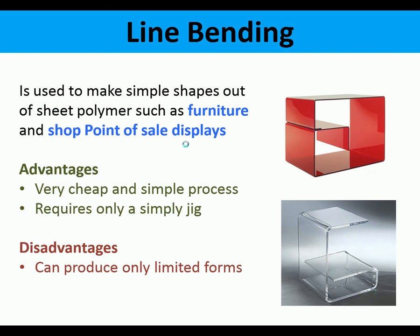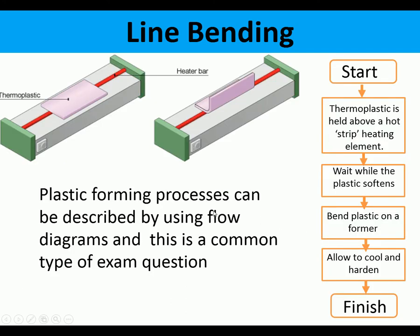Line bending is used to make simple shapes out of sheet polymer such as acrylic. It's used for furniture and shop point-of-sale displays. It's a cheap and very simple process — it only requires a simple jig, but it can only produce simple bends. Here's the process shown as a flow diagram. Flow diagrams quite often come up for these processes in the exam.